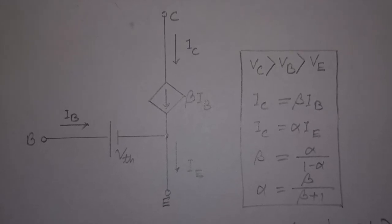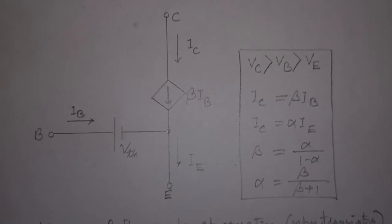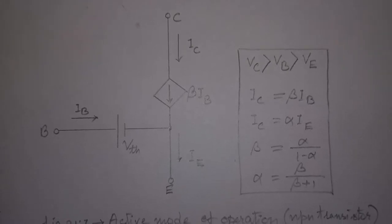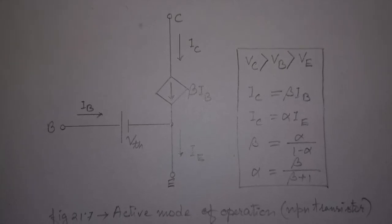Here, the collector current is beta times the base current, where beta is the gain or amplification factor. Alpha is the common base current gain. The relation between alpha and beta are shown.